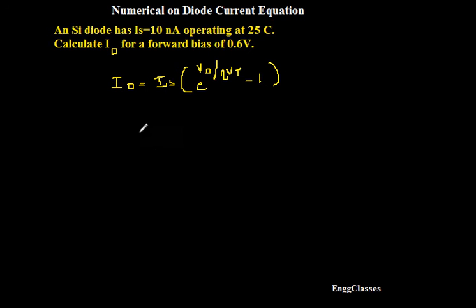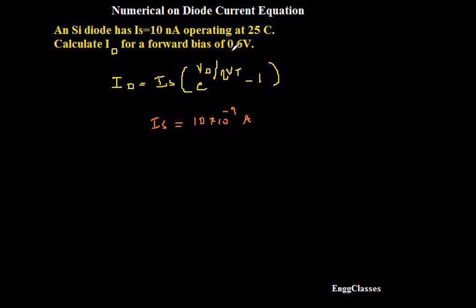What have they stated? IS has been given, which is equal to 10 into 10 to the power minus 9 ampere — that is 10 nanoampere. And it's been given a forward bias of 0.6 volt. That means VD, the applied forward bias voltage, is equal to 0.6 volt.